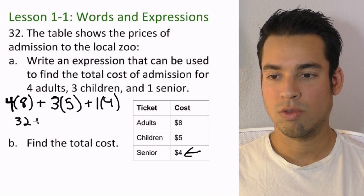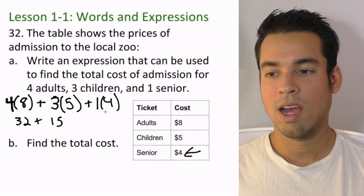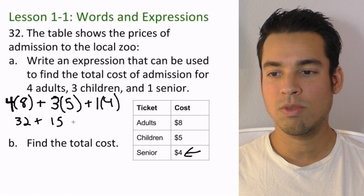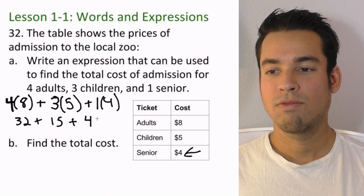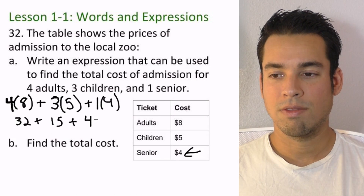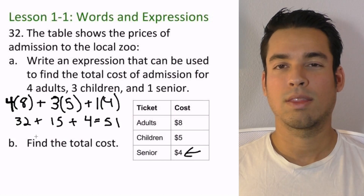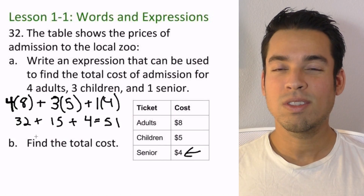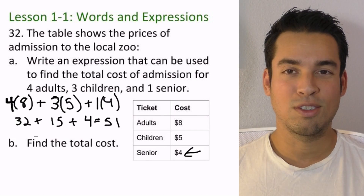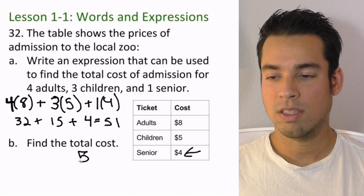4 times 8 is 32, plus 3 times 5 is 15, plus 1 times 4 is 4. We can do this mentally: 4 plus 15 is 19, plus 32 gives us 51. It's easy to think of it as 32 plus 20 equals 52, then subtract 1 — so $51 is our answer for part B.